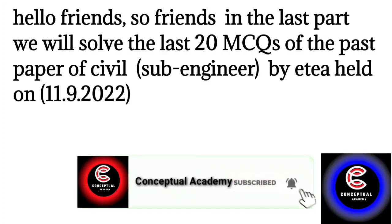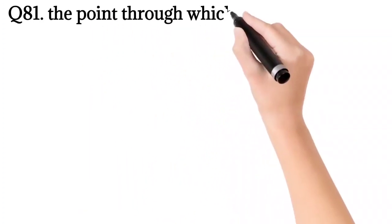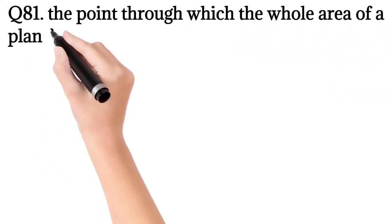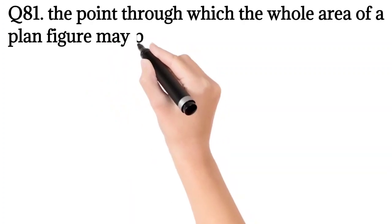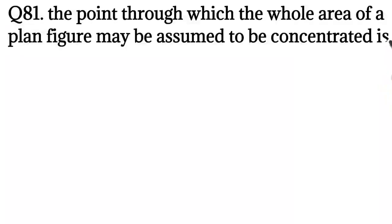Question number 81: The point through which the whole area of a plan figure may be assumed to be concentrated is called? Answer: centroid.